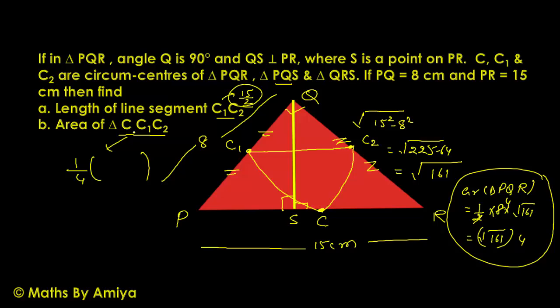We are looking for area of triangle C C1 C2, which is at the midpoints of the sides. So the area of triangle C C1 C2 is one-fourth of the area of triangle PQR. That is 4 root 161 divided by 4. The 4s cancel out, so the required answer is root 161, and this is our answer for the second question. I hope this is clear to you.